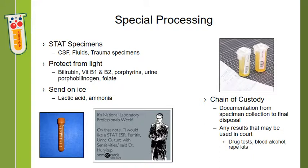Some specimens must be protected from light. Bilirubin really should be, though it's not always. Vitamin B1, B2, vitamin K, porphyrins, urine porphyrinogen, folate, and several others are also on that list. The brown tube shown here is an example of a pour-over tube used to protect specimens from light — you can pour serum, plasma, or whole blood into this tube. Alternatively, you can wrap the tube in aluminum foil. Reagents that come in amber colored bottles rather than clear bottles are protected for the same reason — those reagents are probably light sensitive.